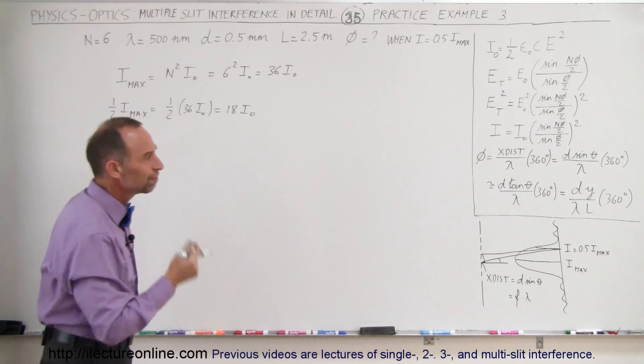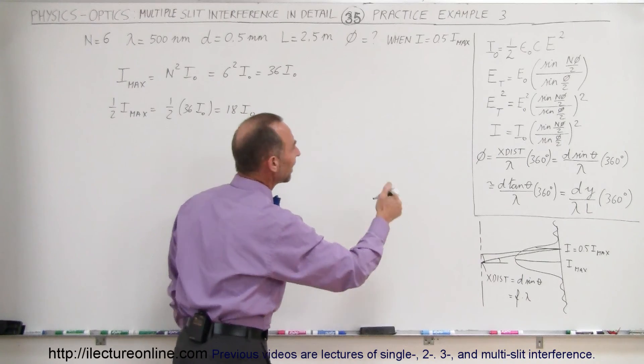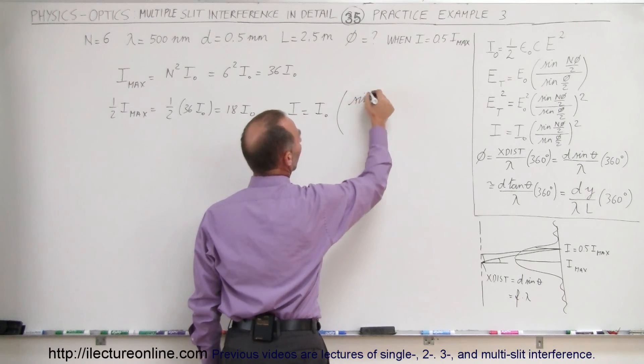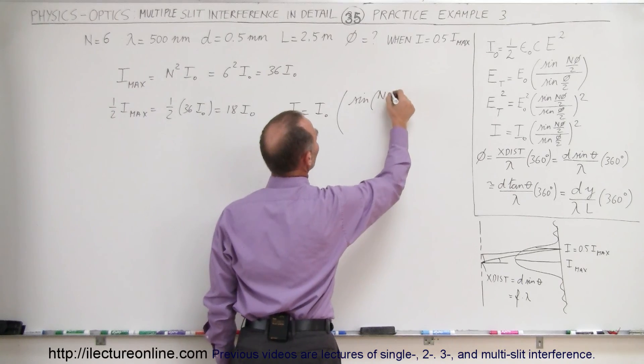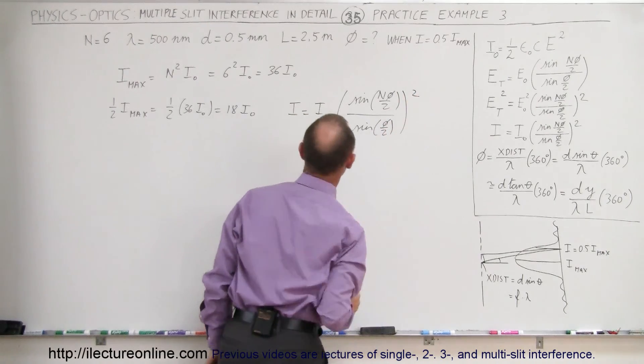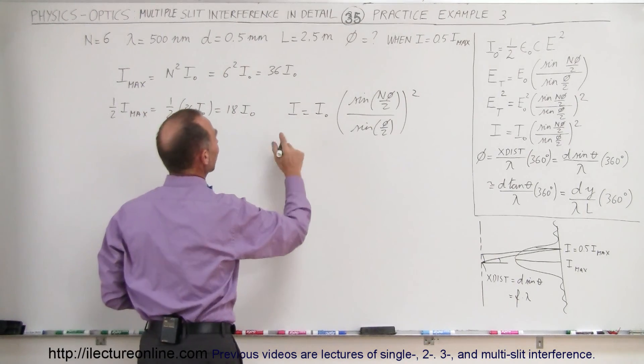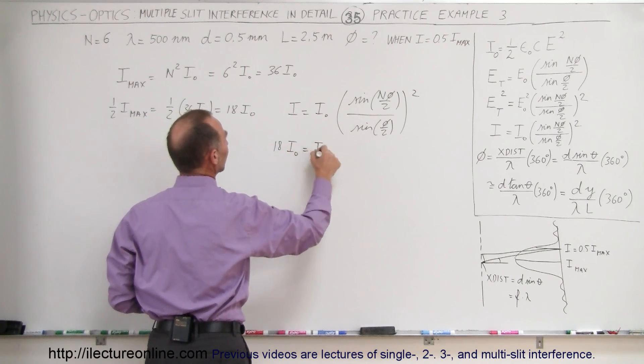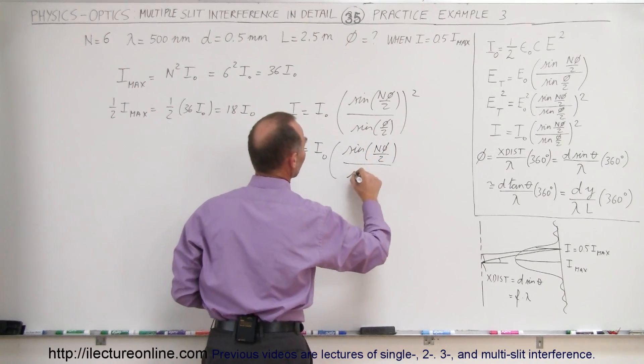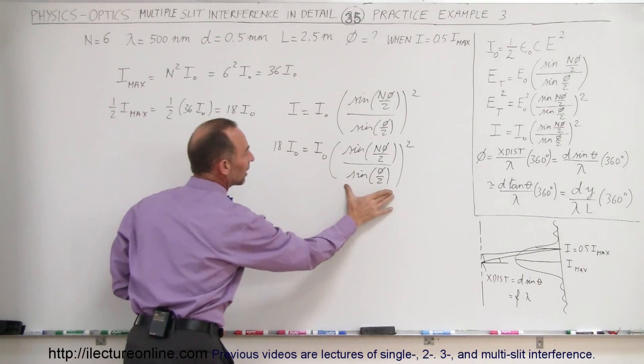But how do we find the phase difference? Notice the equation we normally use to find the intensity: I equals I sub-naught times the ratio of the sine of n times the phase difference divided by 2, divided by the sine of the phase difference divided by 2, the whole quantity squared. So 18 times I sub-naught equals I sub-naught times sine of n times phi over 2 divided by sine of phi over 2, quantity squared.